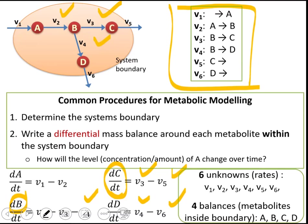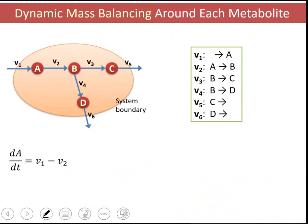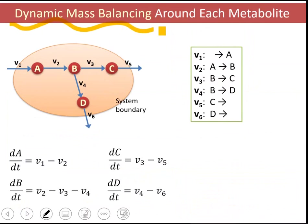If we check our reaction list, we see that we have six unknowns — we don't know the rates of those reactions — and we have four balances around the metabolites inside the system boundary. What we do here is write a balance around each metabolite, and this is also referred to as dynamic mass balancing. Dynamic means time dependent.